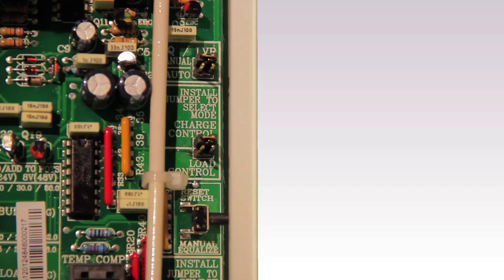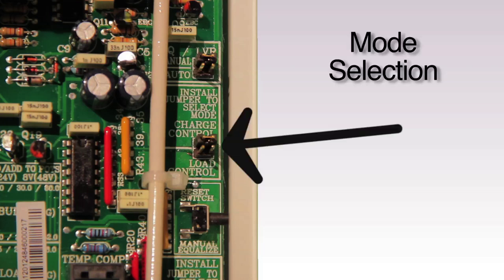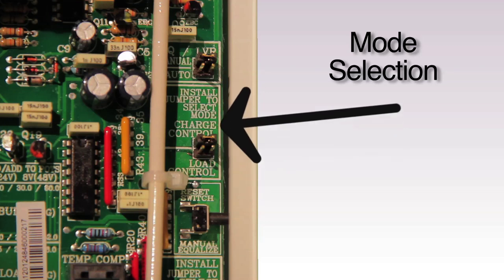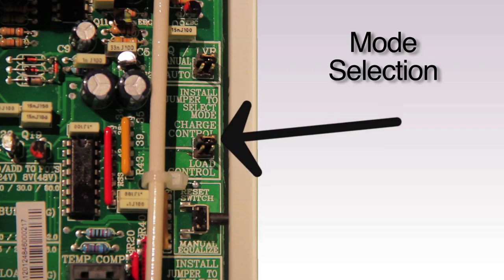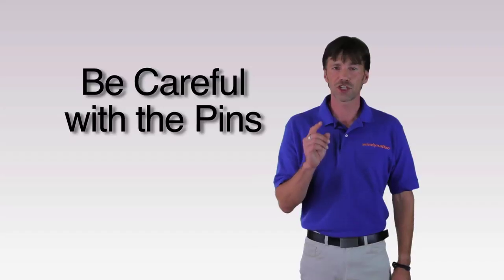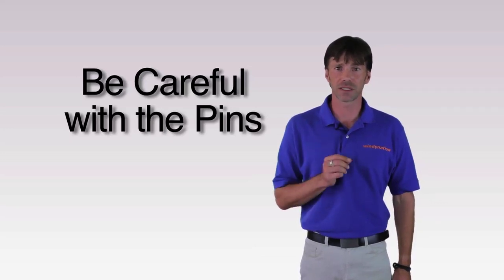You will find three sets of jumpers on the right side of the circuit board. The middle jumper is to change the mode of the C60 between load controller and charge controller. We're setting up as a diversion controller, which falls under the charge control mode. This means the jumper should cover the upper pins. When changing the jumpers, be extra careful not to damage or bend the pins.